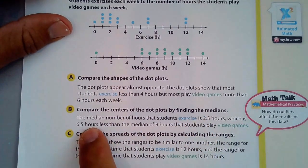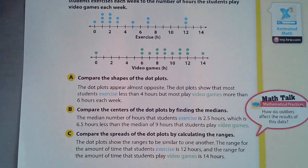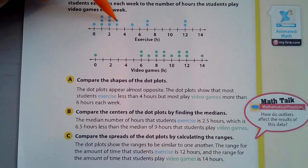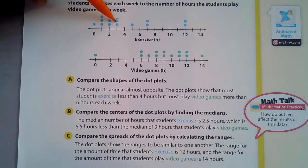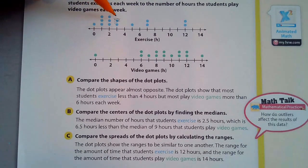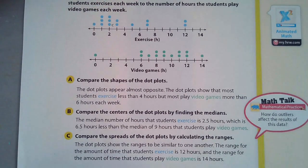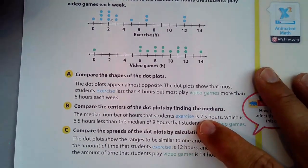Compare the centers of the dot plots by finding the medians. And I like this part, this method here. So 2.5 hours is the median for the exercise, 2.5. It looks like this probably is the median. 1, 2, 3, 4, 5, 6, and 1, 2, 3, 4, 5, 6, 7. I guess so. So this is about the median right here, 2.5. Oh, no, that's 3. So 2.5, yeah, 2.5 would have to be a little bit lower right here. 2.5 right there.